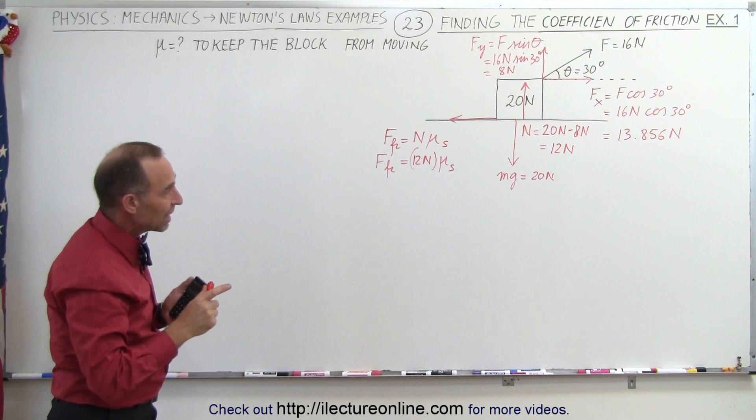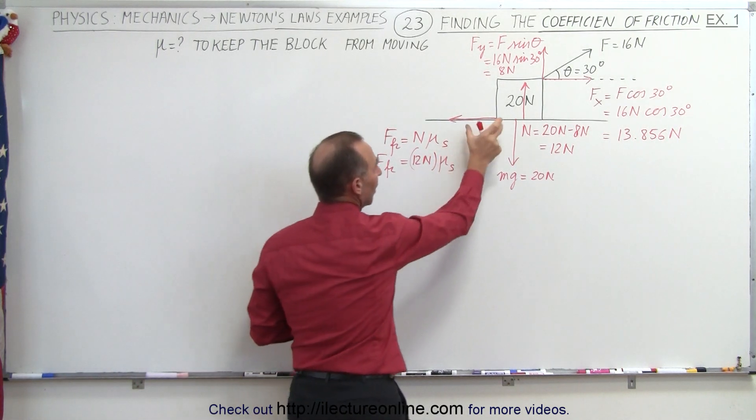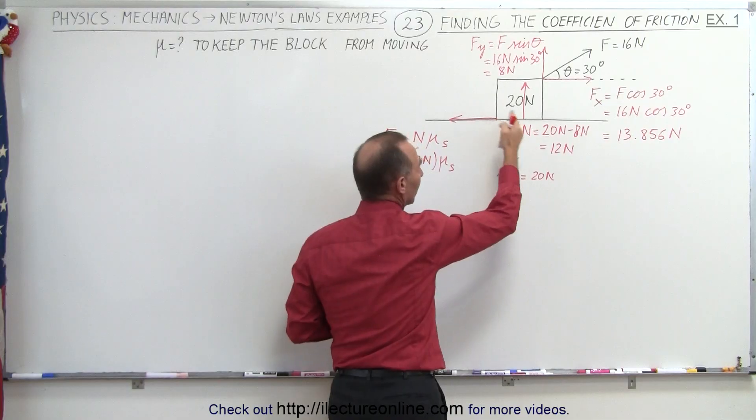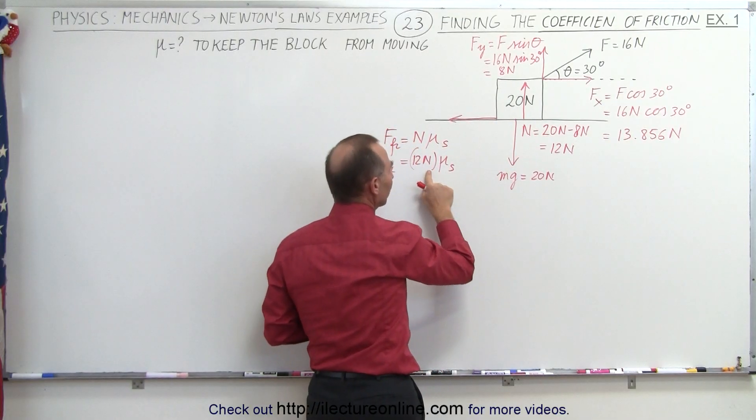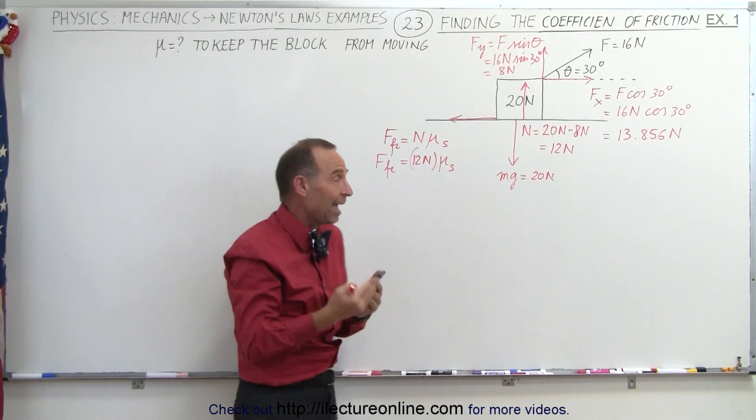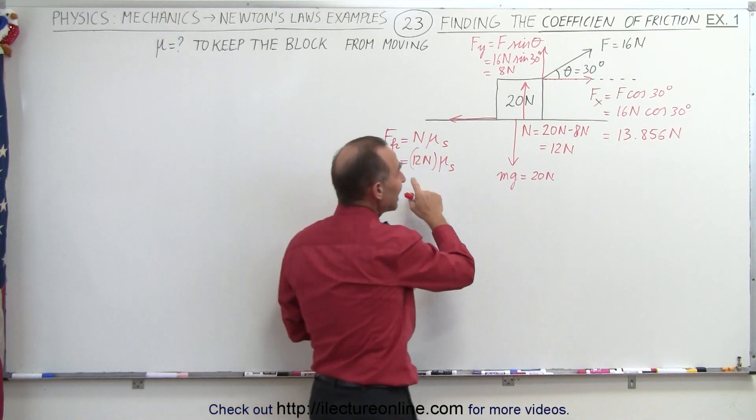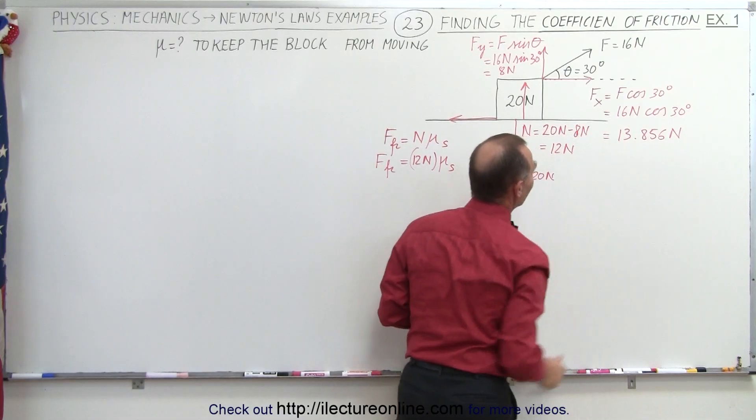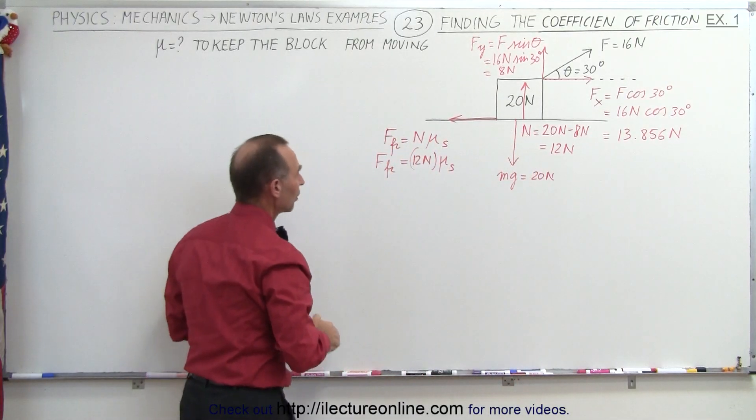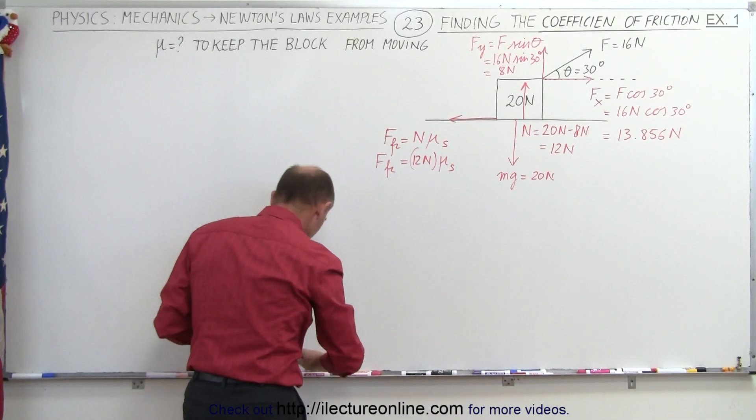If the friction force is going to prevent the block from sliding to the right, prevent the block from beginning to move, the maximum friction force must be at least equal to the force in the x direction, which we have right here.